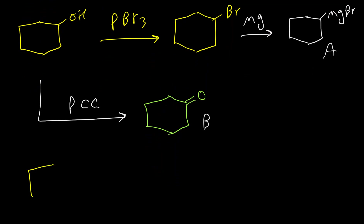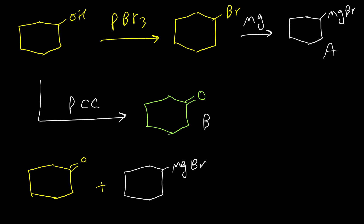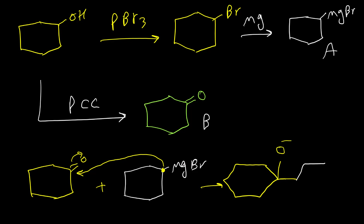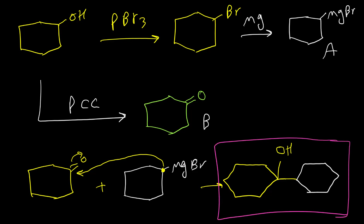So by reaction of compound B with compound A, this negative carbon attacks here to form this intermediate, and then after acidifying the mixture the O negative turns to OH. And we can synthesize this alcohol by using only cyclohexanol as a source of carbon.